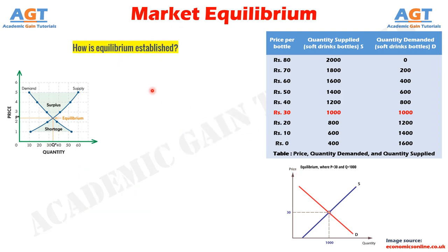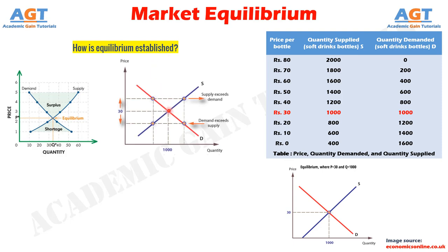How is equilibrium established? At a price higher than equilibrium, demand will be less than 1,000 but supply will be more than 1,000, and there will be an excess of supply in the short run. Graphically, demand contracts inwards along the curve and supply extends outwards along the curve. Both of these changes are called movements along the demand or supply curve in response to a price change.